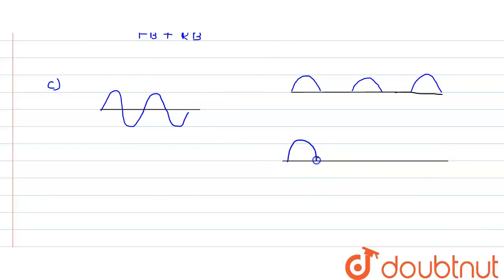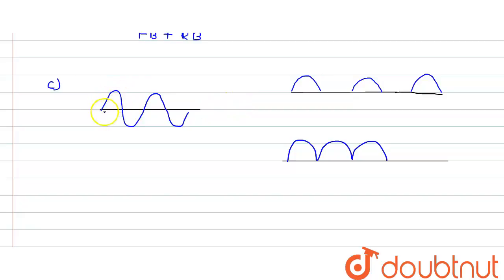In the full wave rectifier, it converts the negative cycle also to the positive cycle. In this part of the cycle we are converted into the positive cycle, so full current would be flowing and we get an output voltage. But in the negative part it would behave as reverse bias and there would not be any current — just a straight line.